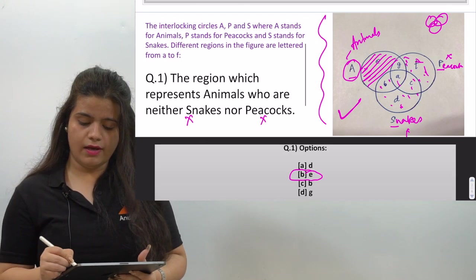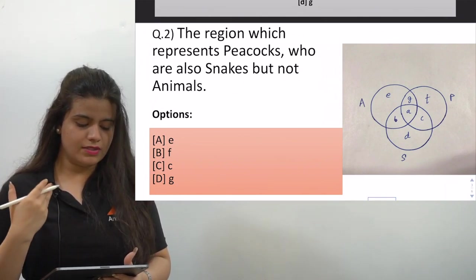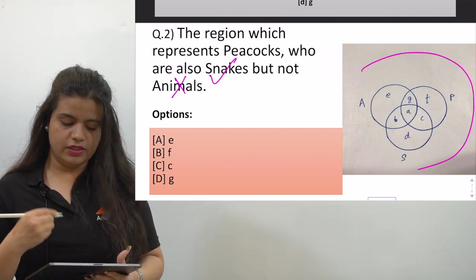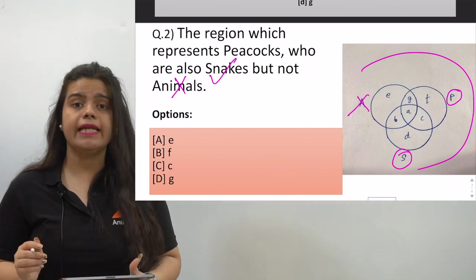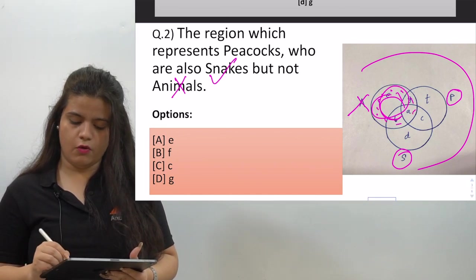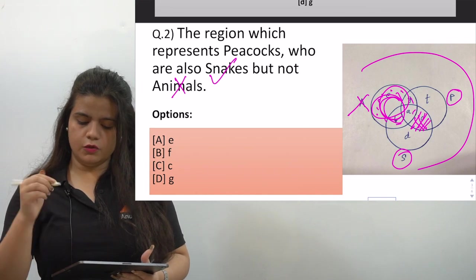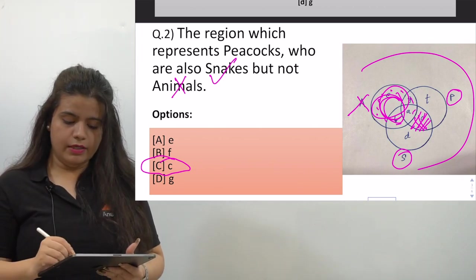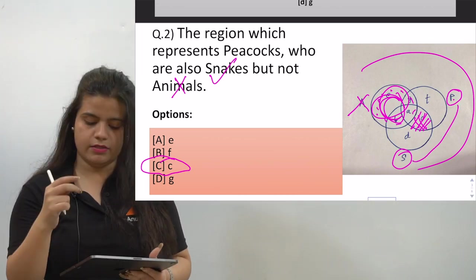The second question asks: which region represents peacocks who are also snakes, but not animals? We need to find the region where Peacocks and Snakes overlap, but which is outside the Animals circle. That intersection part — which belongs to Peacocks and Snakes but not Animals — is the answer. The answer is C.